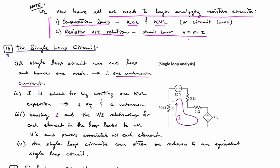We're first going to look at single loop circuits, and then we'll look at single node pair circuits. A single loop circuit is one where all of the elements are arranged in a loop. Here I'm drawing some blobs for elements. They all share the same current.